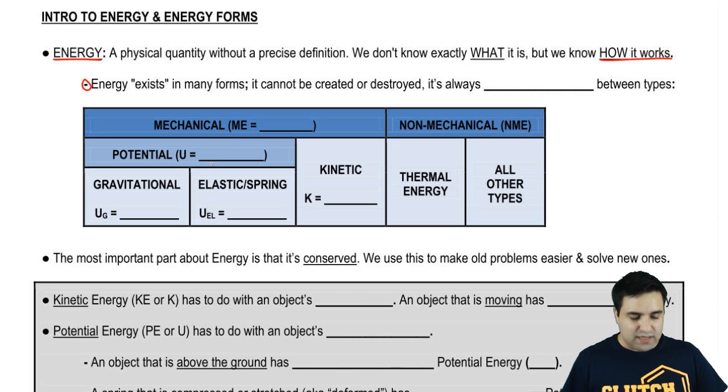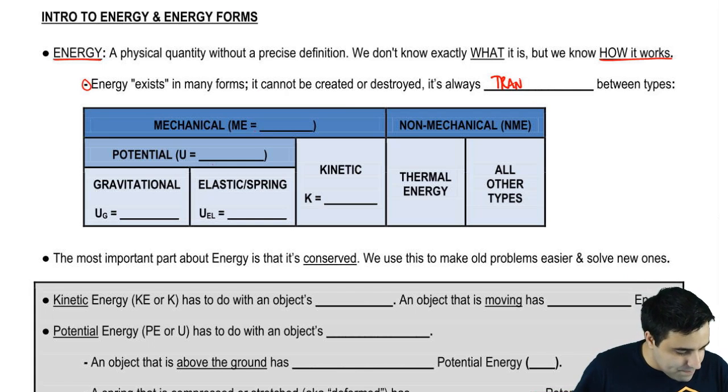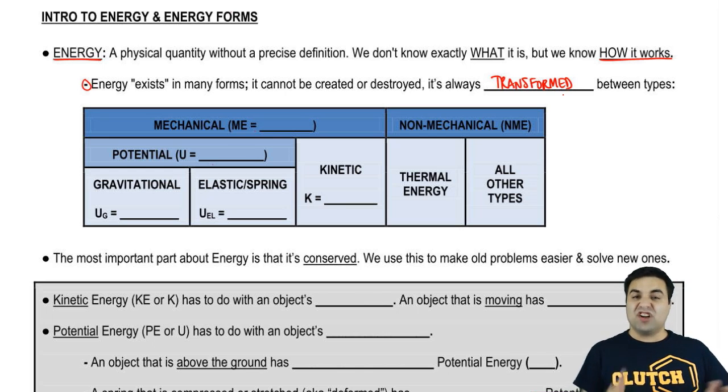The key thing to know about energy is that it exists in many forms. There are multiple types of energies. And energy also cannot be destroyed or created. It must always be transformed between types, converted from one type of energy to the other.